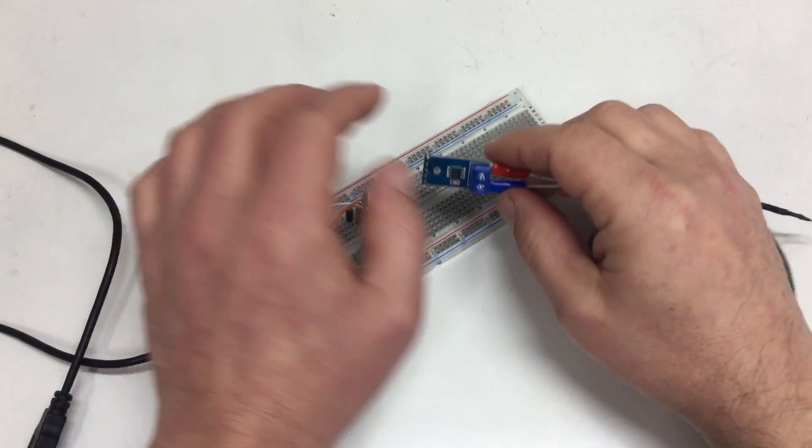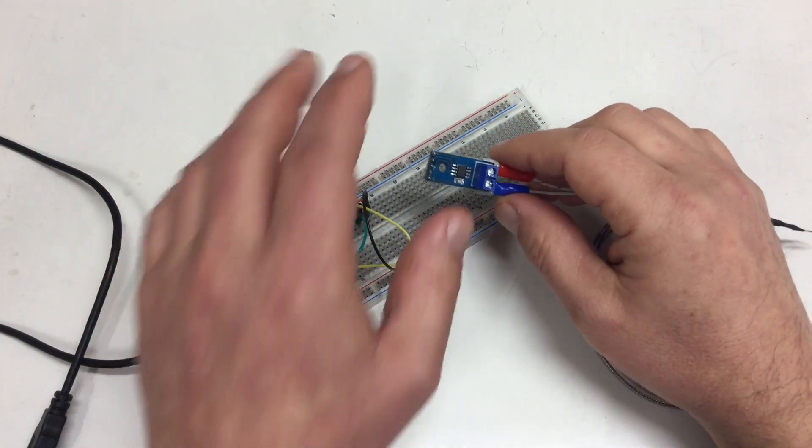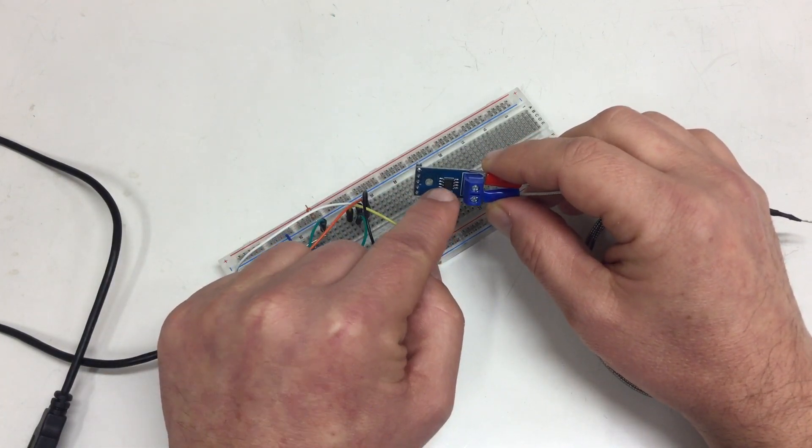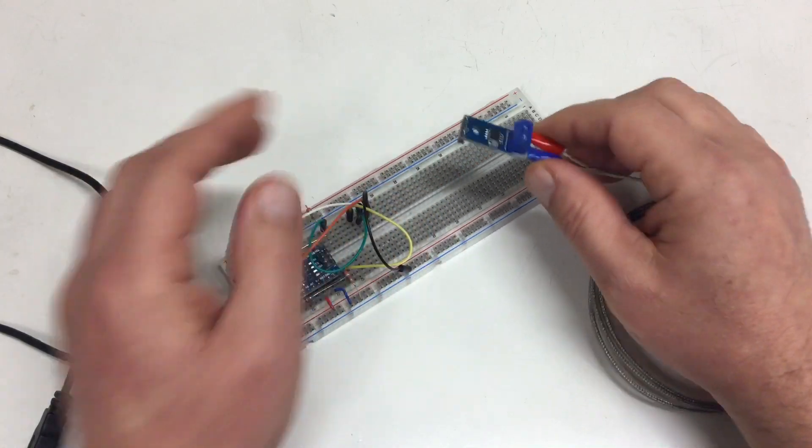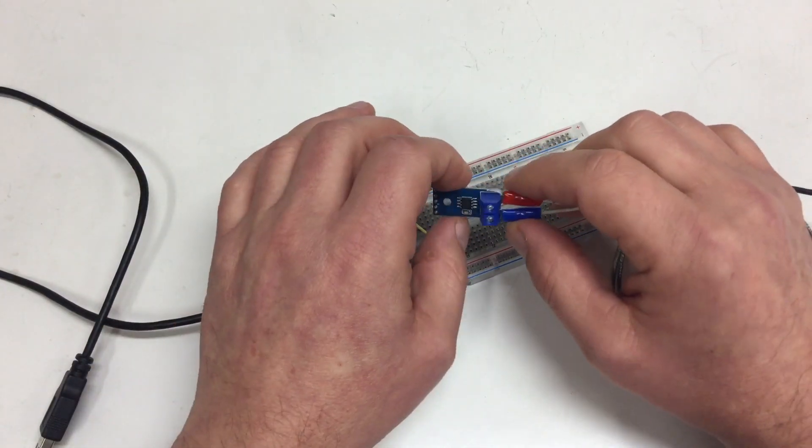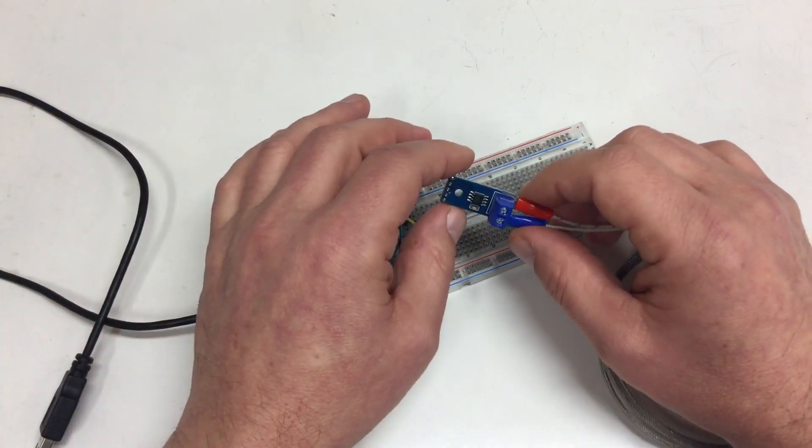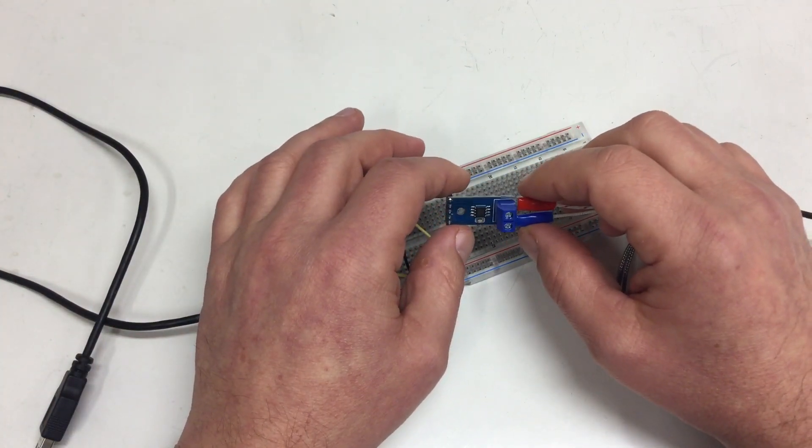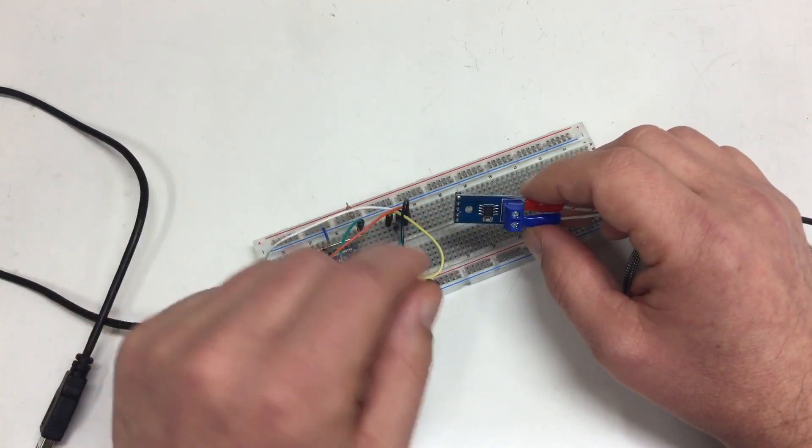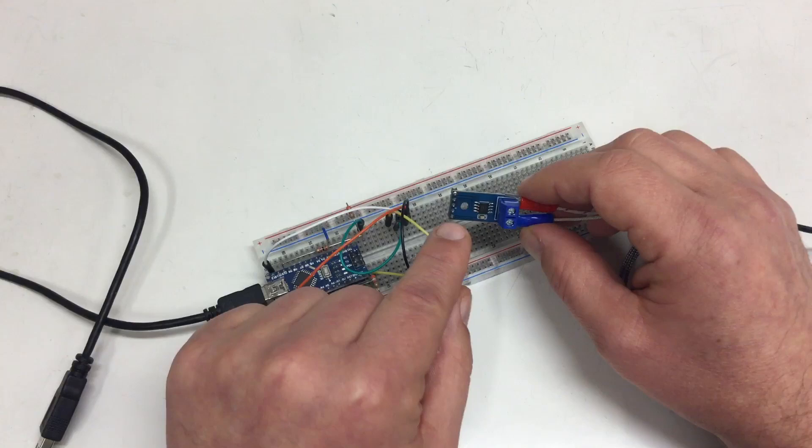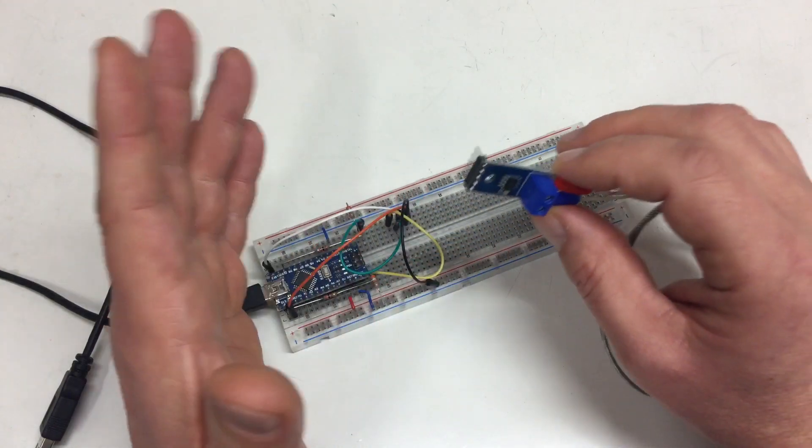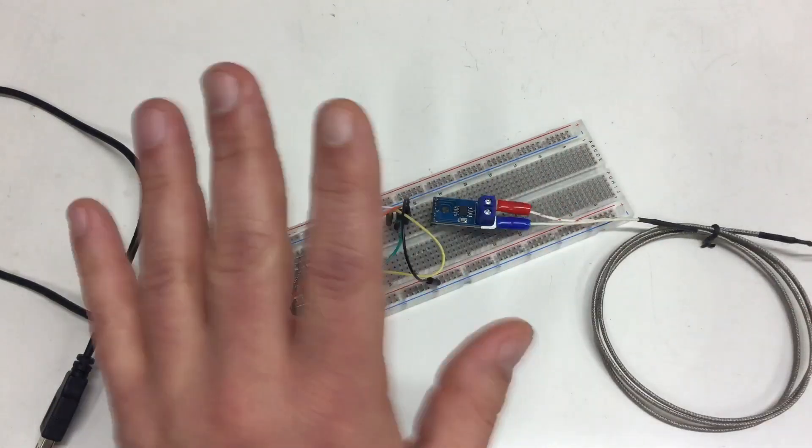Anyway, I will order now some original Max 31855s and replace the fake here on the breakout board, because I've already finished everything for that breakout board here. And then I will continue to do what I planned to do, namely making a little tutorial video about these Max 31855 chips. Till then, bye!